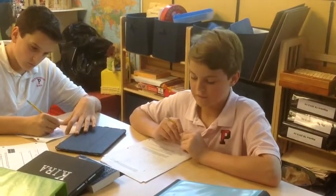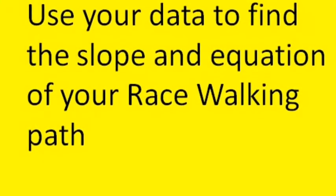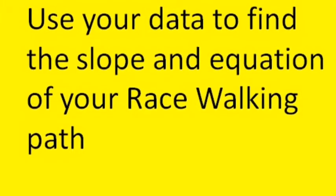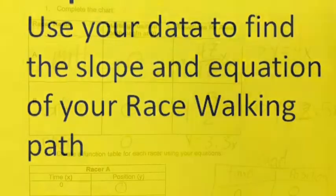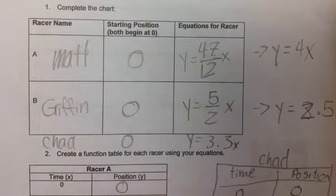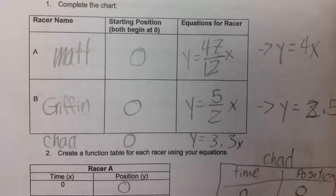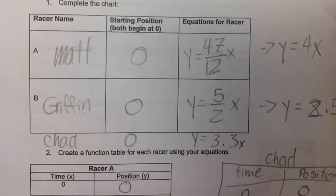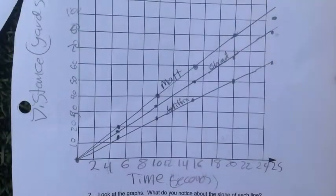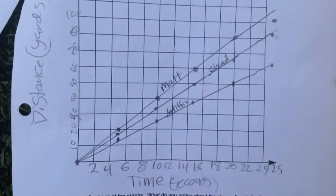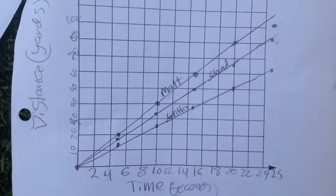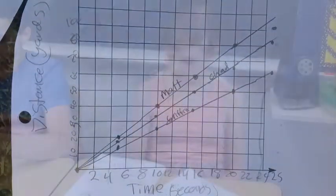We're going up by intervals of 5 on the y-axis. The slope was steeper, which means they went faster.